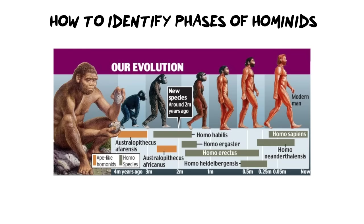Hi everybody and welcome back to Ms. Angler's biology class. I am Ms. Angler. In today's video we are going to do the final video in my series about human evolution and hominids, and we're going to look at how do you actually identify the different phases of hominids via their skulls or perhaps the fossil evidence that has been left behind.